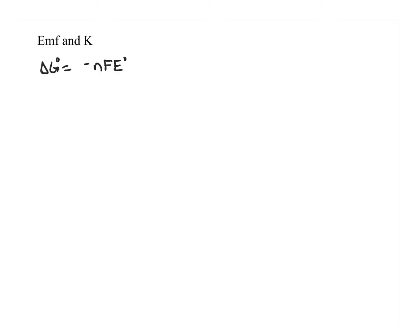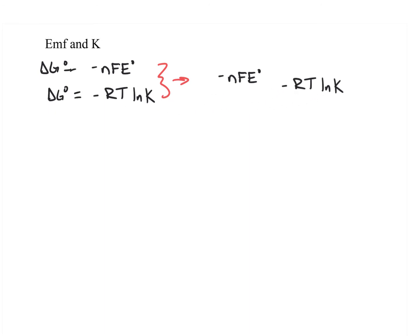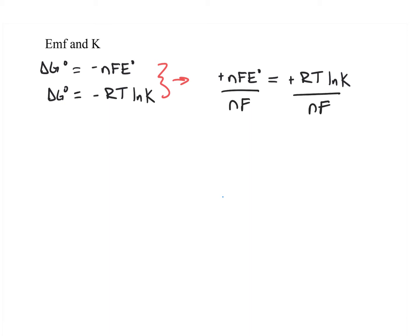We know that free energy can be related to the cell potential with the formula delta G equals negative NFE. And from last chapter, we know free energy is related to the equilibrium constant by the formula negative RT times the natural log of K. So we can put these two together to relate cell potential and equilibrium constant. We'll set negative NFE equal to negative RT natural log of K, then use algebra to solve for cell potential. In the end, cell potential equals RT over NF times the natural log of K.